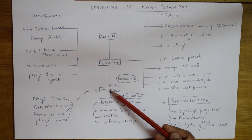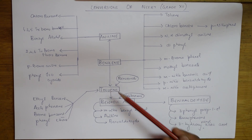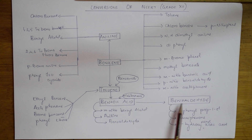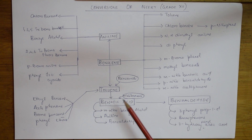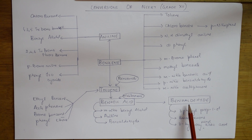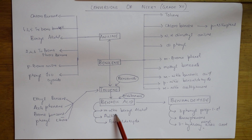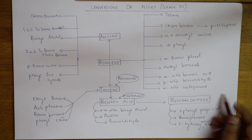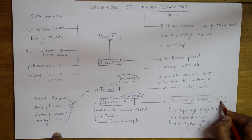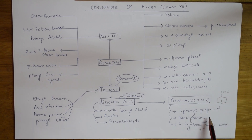Next, from benzene to toluene, toluene is further converted to benzoic acid, and benzoic acid is further converted to benzaldehyde. They may ask one conversion at a time — benzene to toluene, toluene to benzoic acid, or benzoic acid to benzaldehyde. Benzoic acid is also converted to meta-nitrobenzene, benzyl alcohol, aniline, and benzaldehyde. Benzaldehyde is further converted to 3-phenylpropanaminol, benzophenone, and 3-hydroxyphenylacetic acid.